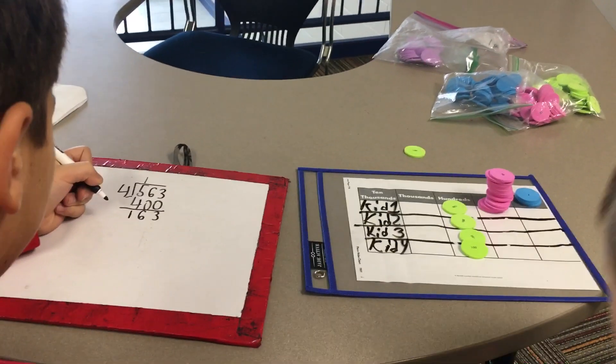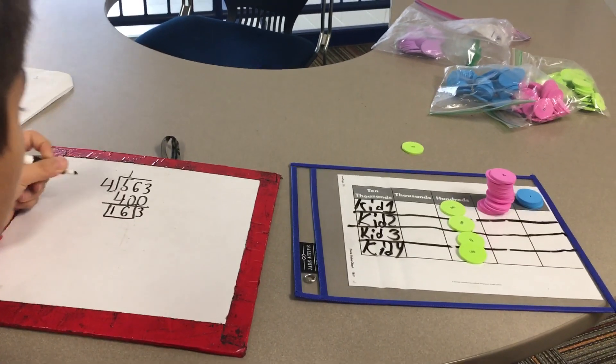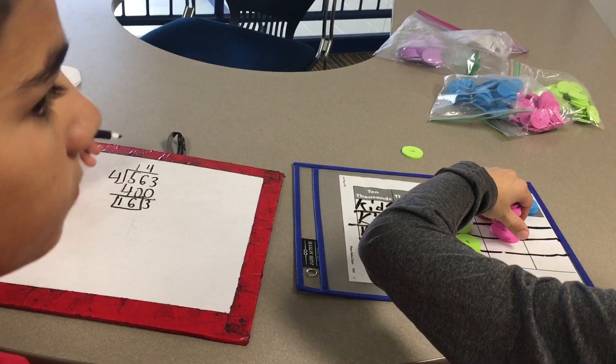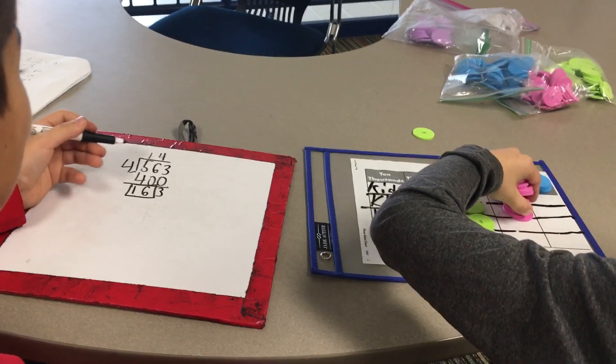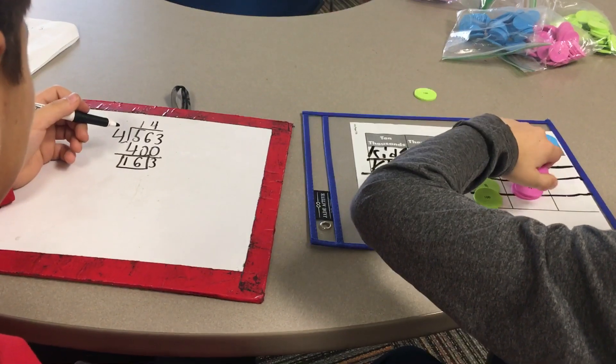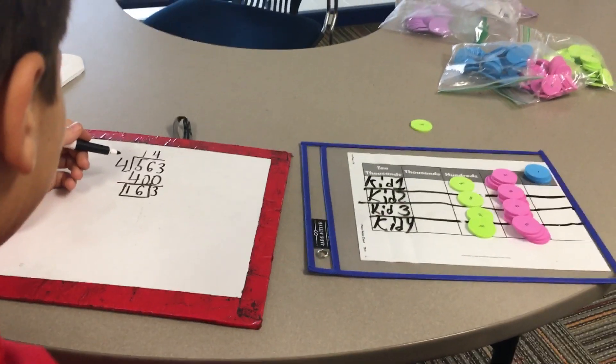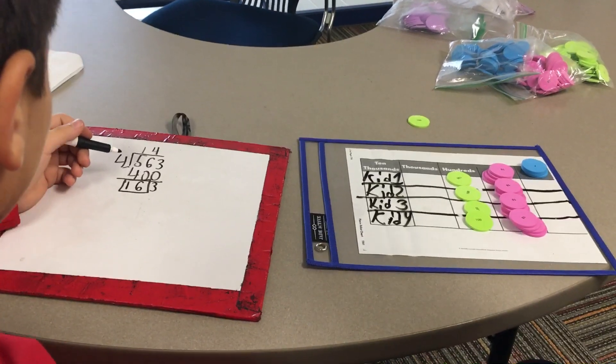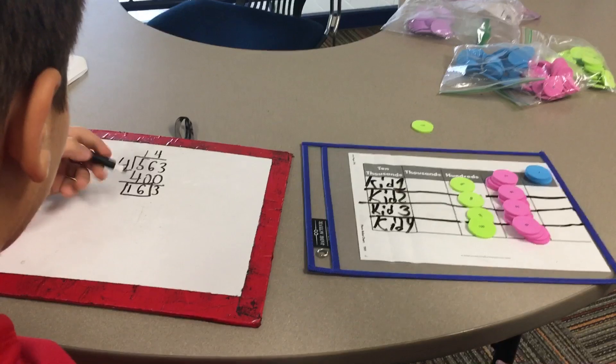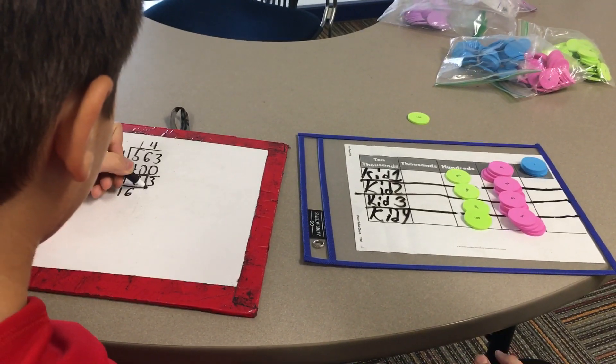Now we have a total of 16 tens to pass out between four kids. Each kid is going to get 4 tens of chips. That's 4 tens times 4 kids. That means I passed out a total of 16 tens. So I passed out all my tens.